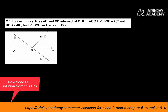Let us look at question 1. In the given figure, line AB and CD intersect at point O. So there are two lines which are given to you, AB and then you have line CD, and the two of them intersect at point O.